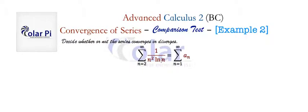If we get rid of this ln of n in the denominator, then we get an infinite series made of 1 over n squared. And we know that that converges by the p series with p equal to 2.